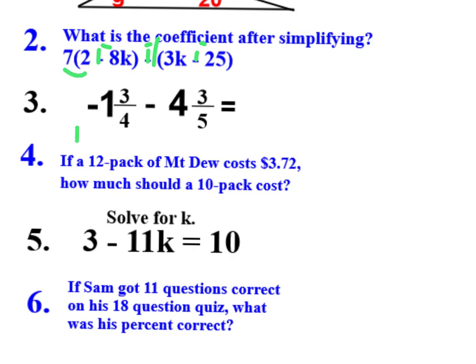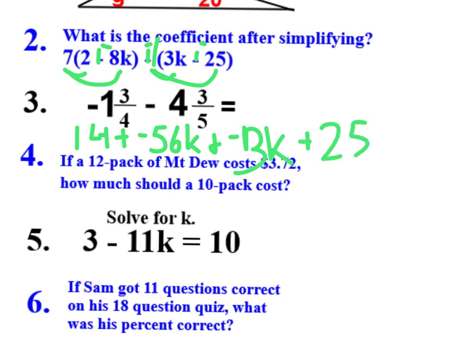7 times 2 is 14. 7 times negative 8k is 1 negative, which makes your answer negative because it's an odd number of negatives in a multiplication or division problem. And then I have a negative 1 times 3k. Once again, there's only 1 negative. That makes that negative 3k. And then I have a negative 1 times a negative 25. That's two negatives in a multiplication problem, which makes your answer positive.